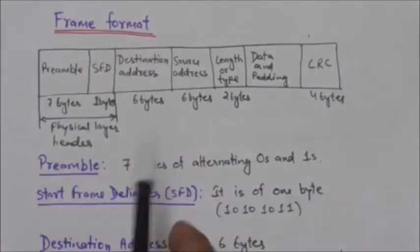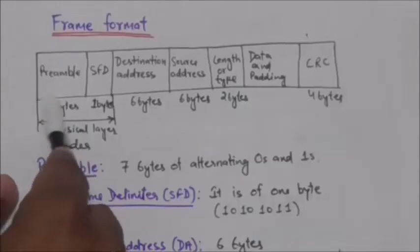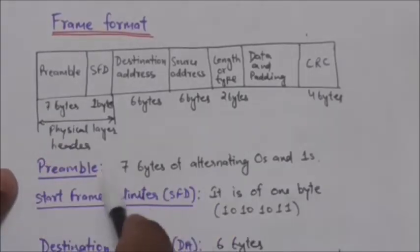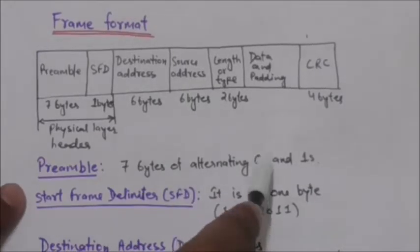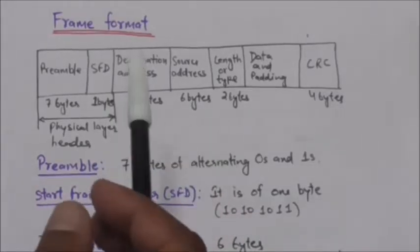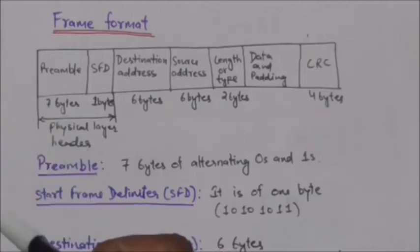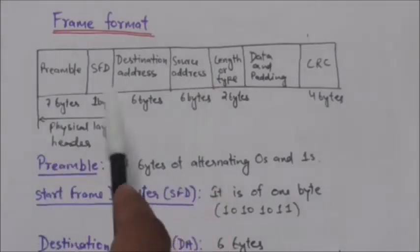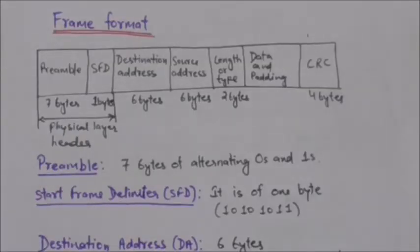The first field of the Ethernet frame is the Preamble. It contains seven bytes of alternating zeros and ones. This preamble alerts the receiving system to the coming frame and enables it to synchronize its input timing.